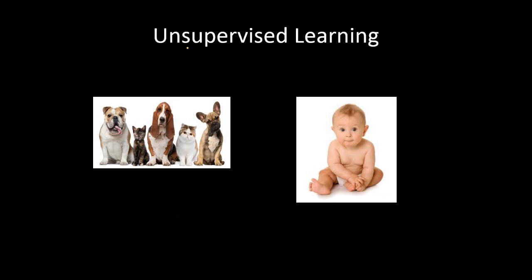The next case is the unsupervised learning algorithm. In this case, we have shown the baby one picture which has got both dogs and cats. The baby hasn't seen dogs and cats ever, so it doesn't know what the features of a dog are and what the features of a cat are. So the baby is not able to categorize them as dog and cat like in the previous case, where the baby knew what a banana and an apple were because we had already shown the pictures.